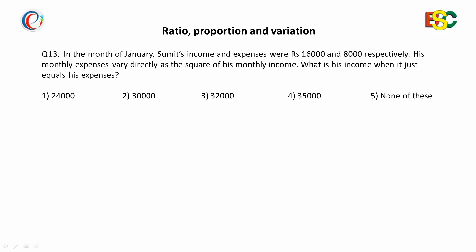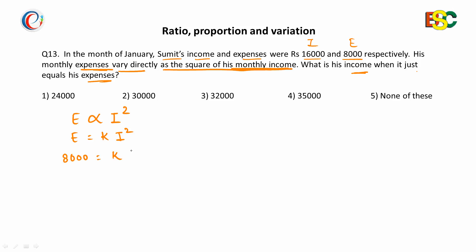In this question, income is sixteen thousand and expenditure is eight thousand. His monthly expenditure varies directly as the square of his monthly income, so E is equal to K times I squared. We have to find the income when it is just equal to his expenses. His expenditure is given as eight thousand and income as sixteen thousand.